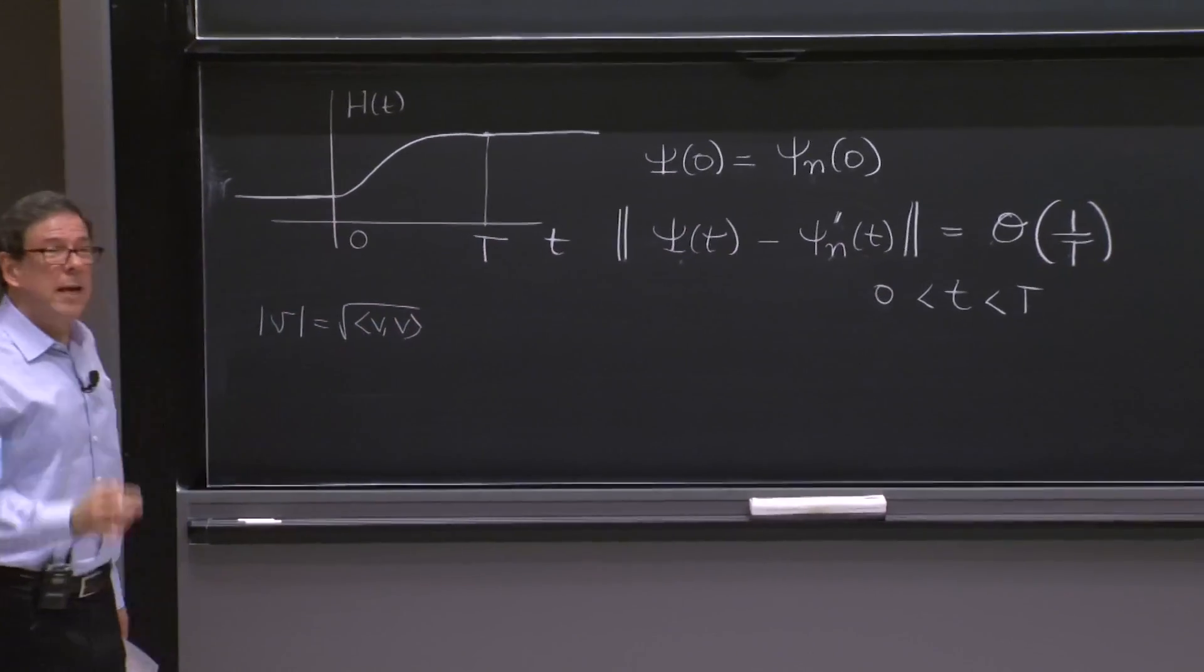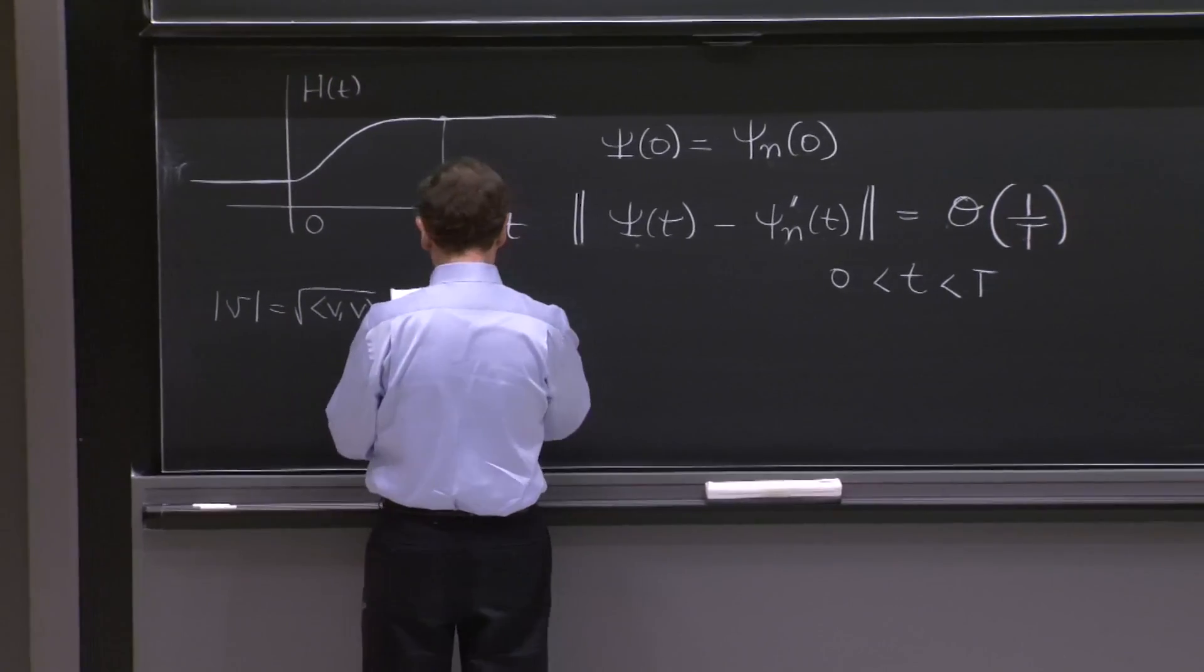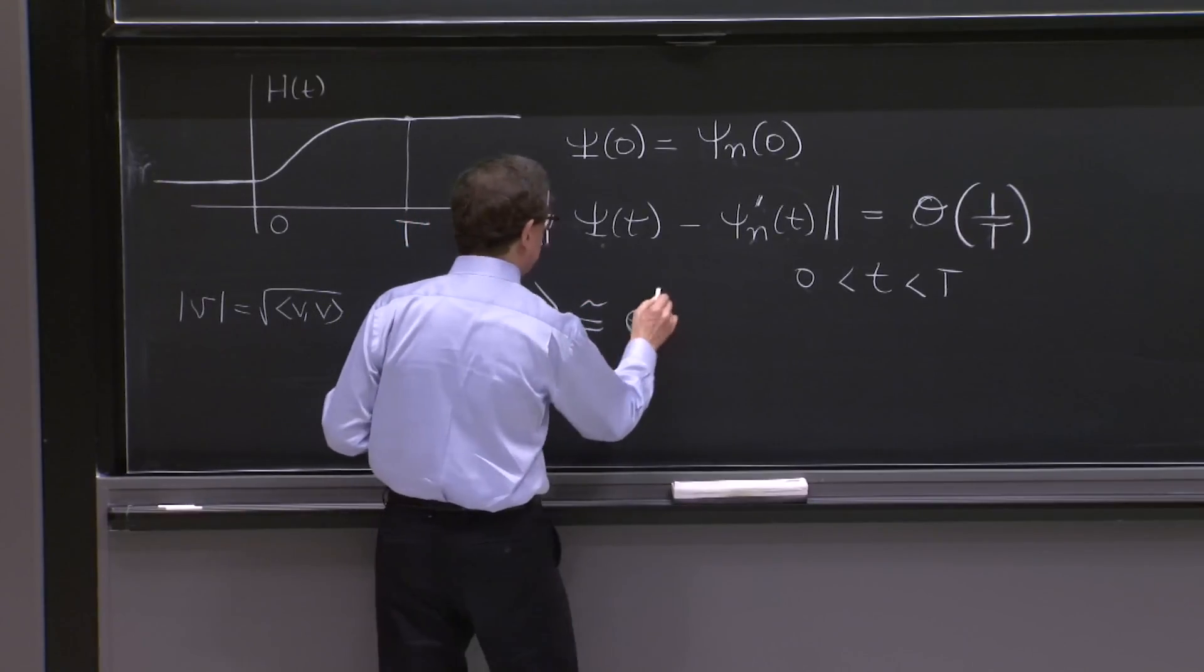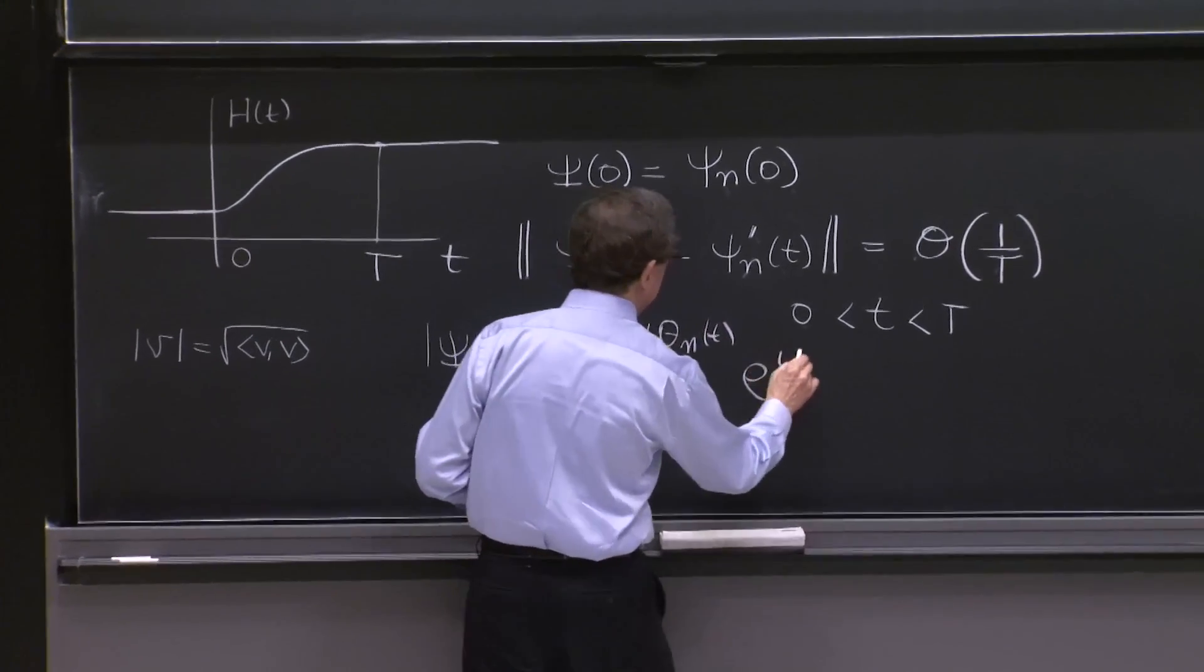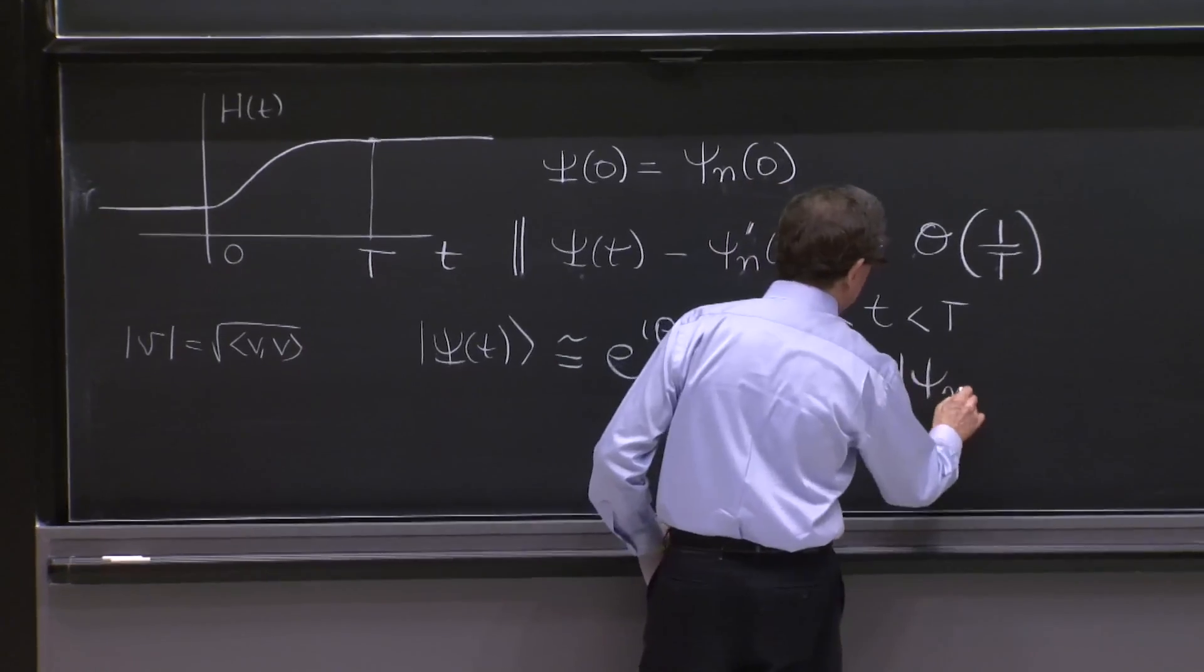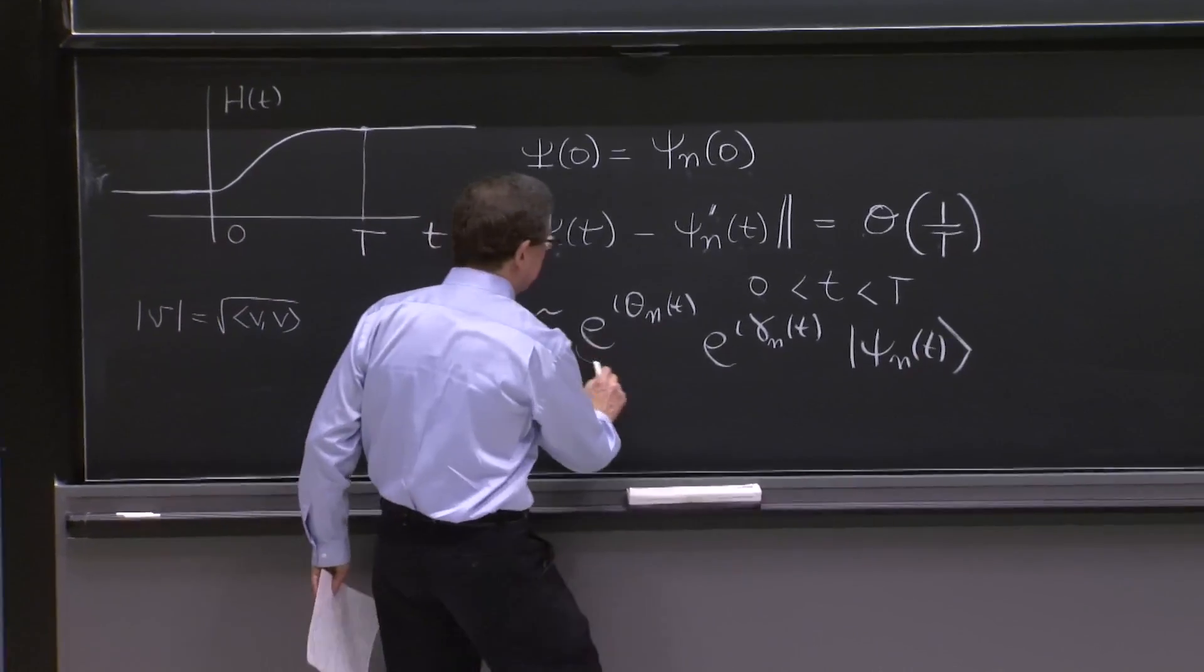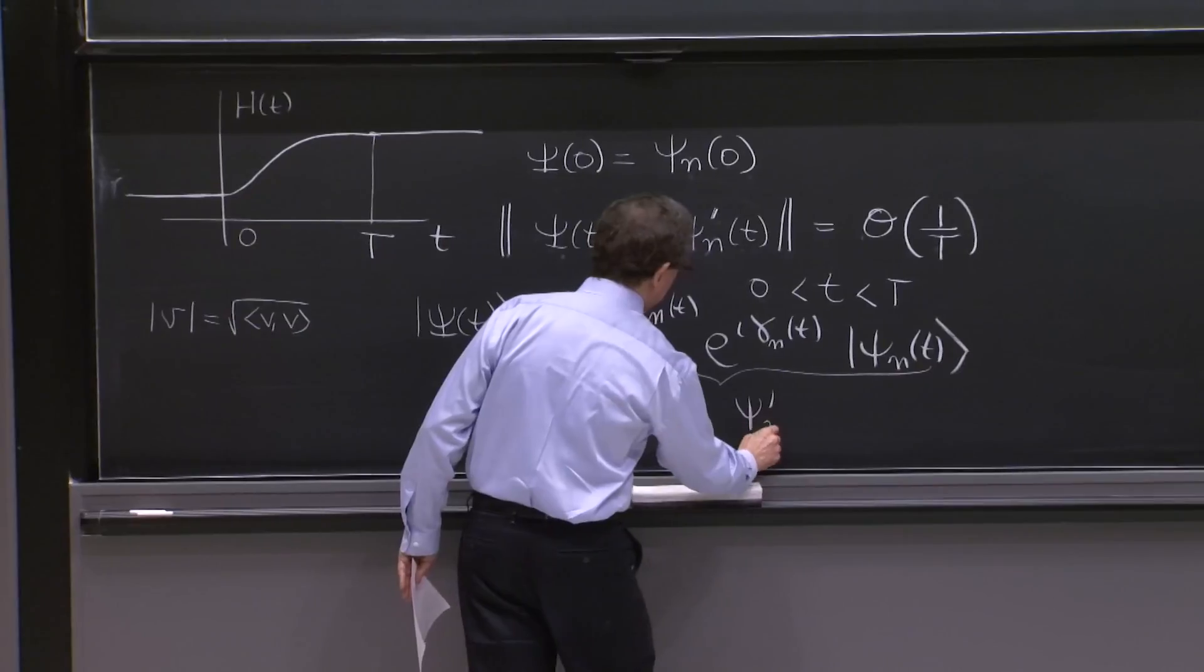And we calculated a bit this phase. And we found that the state psi of t is roughly equal to e to the i theta n of t, e to the i gamma n of t, psi n of t.